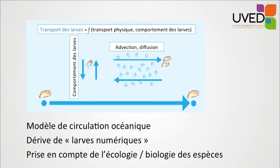To study larval behavior, we use ocean circulation models based on the speed and direction of currents in three dimensions. We release digital larvae in the area, which behave like little floaters and drift with the currents, allowing us to study models of digital larvae drifting. Once we acquire knowledge on the biology of species, we can also add behavioral data.